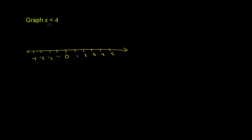And to show that we're not going to include 4, what we're going to do is we're going to draw a circle around 4. So this shows us that we're not including 4. If we were including 4, I would make that a solid dot.